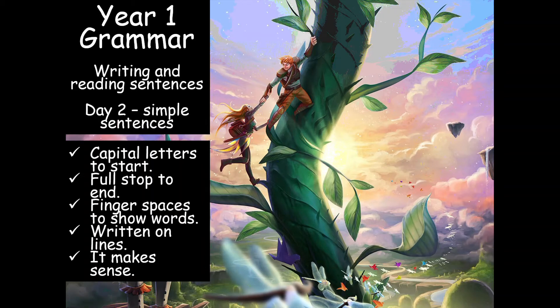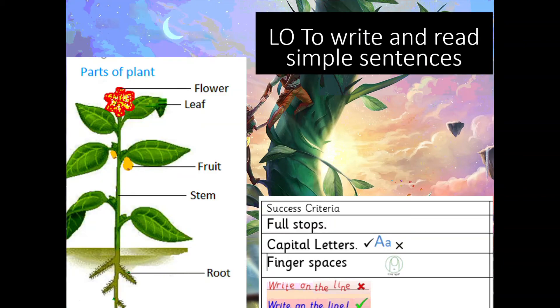Just like yesterday, you're going to be reading back your sentences to your grown-ups and then they're going to check what features are there. Here's your challenge today: you're going to write and read simple sentences based around the picture shown here.